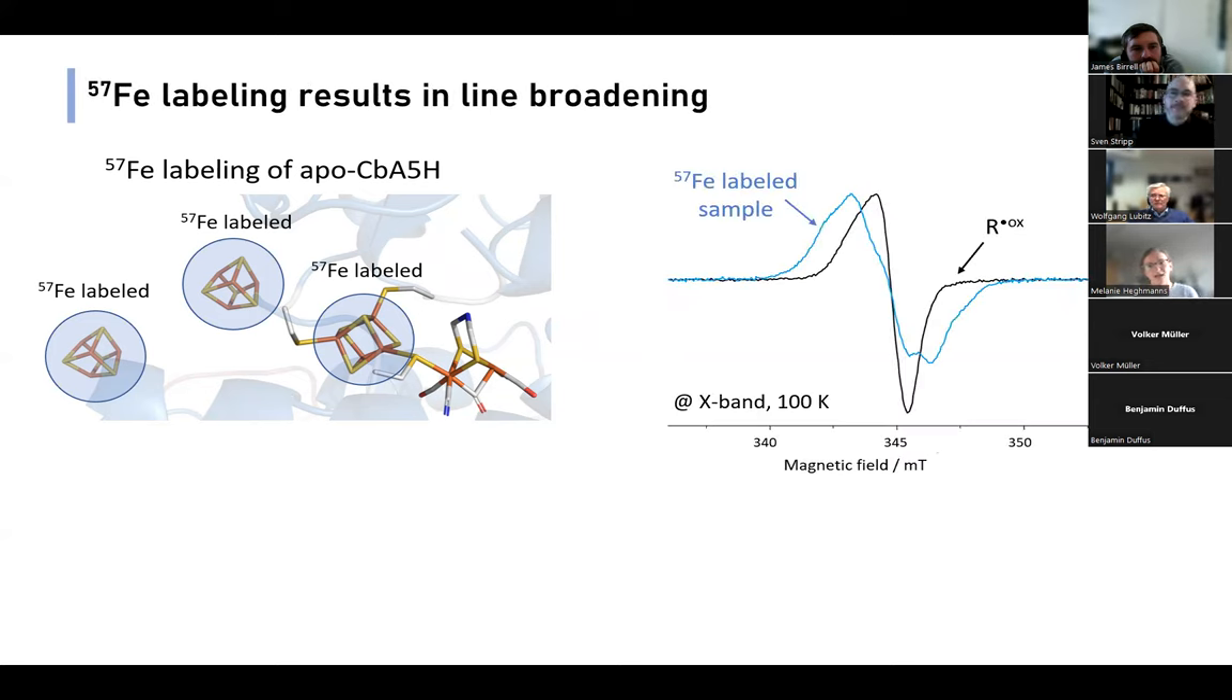Next we asked where actually R^ox is located inside the protein. To see if it might be related with the iron-sulfur centers, we performed 57Fe labeling of the apo enzyme. This means that all 4Fe-4S clusters are labeled, but not the di-iron subsite. When we compare the spectra of the 57Fe-enriched samples versus R^ox, the g-value does not change, but we observe significant EPR line broadening due to hyperfine coupling interactions between our electron spin and the 57Fe nuclei.